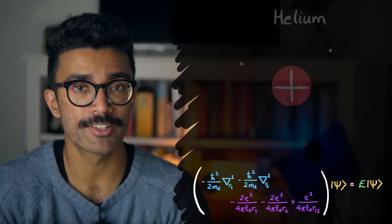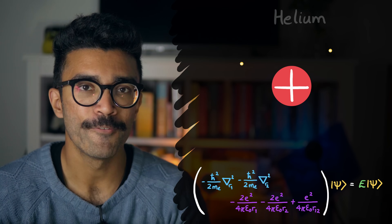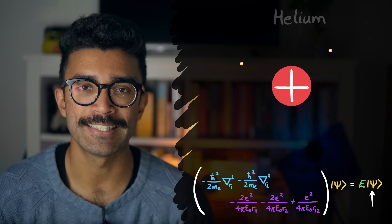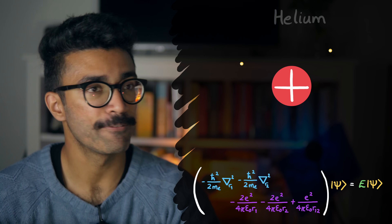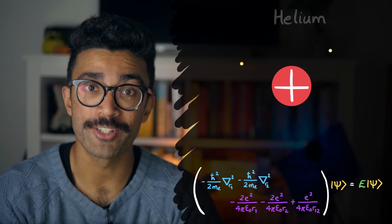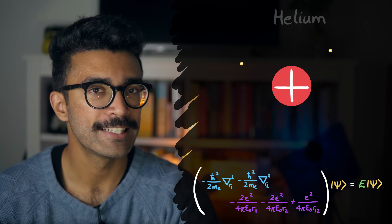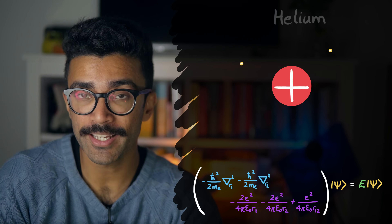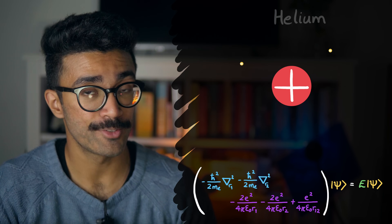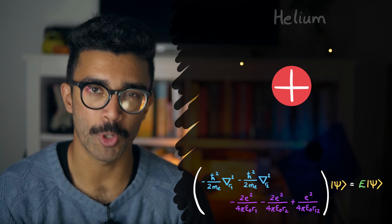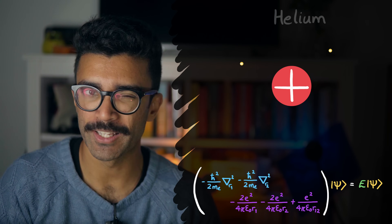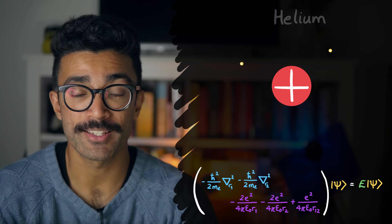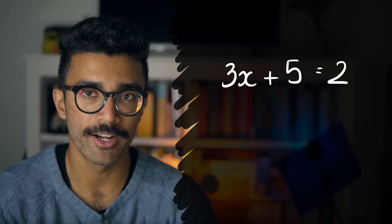At this point we've generated the Schrödinger equation that applies to this model of the helium atom. Finding a solution — meaning finding the wave functions that work for this system — is actually very difficult. What we have is a differential equation, and we don't have good mathematical techniques to easily find the allowed wave functions that are solutions to this equation. Let me use an analogy: imagine a simple equation like 3x + 5 = 2.